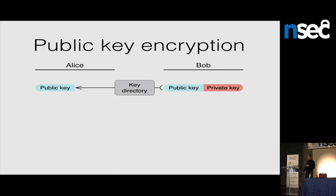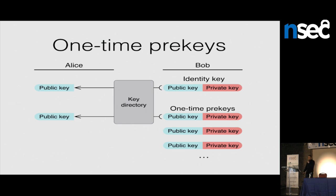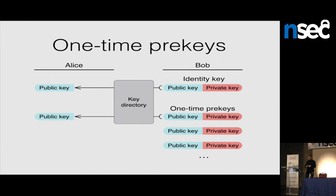One option is to give Bob not just a long-term identity key but also a bunch of one-time-use key pairs. He could generate around a hundred one-time pre-keys and publish them to his server. When Alice wants to send him a message, she fetches one of those pre-keys and encrypts the message so it can only be decrypted by Bob who knows both his long-term private key and his pre-key private key. When Bob decrypts the message, he can delete that pre-key private key right away, making the message undecryptable if he gets compromised later. That gives very strong forward security.